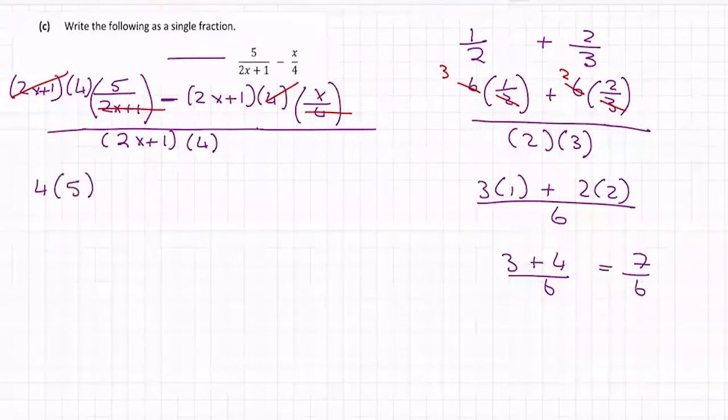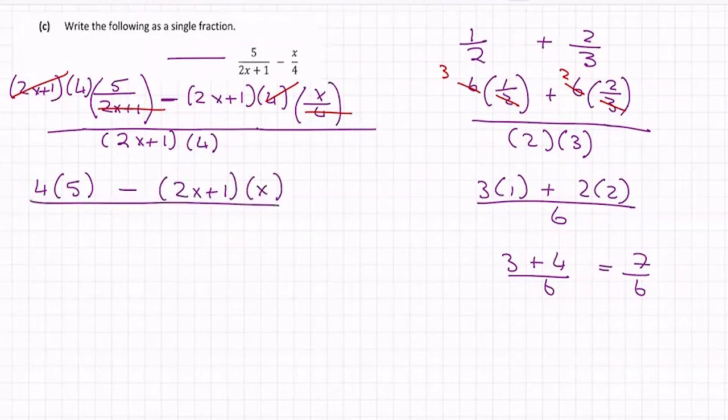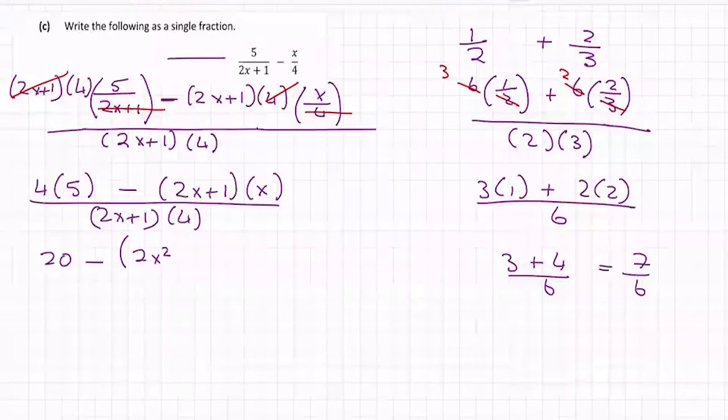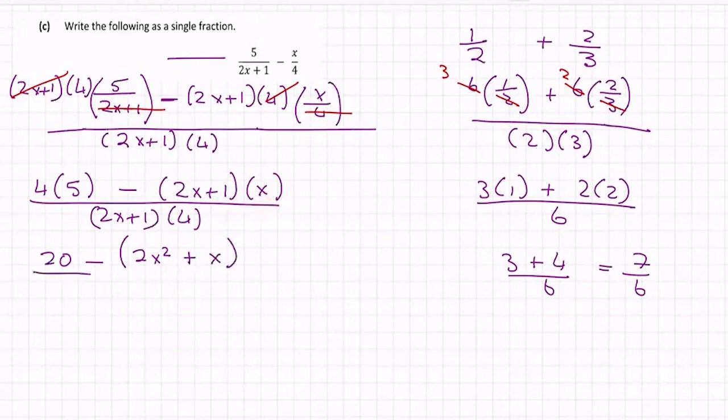So four times five minus two x plus one times x, all over two x plus one times four. And then let's multiply. So four fives are 20 minus two x by x, two x squared. Go back to that minus in a minute. Plus one by x plus x. Let's multiply the bottom. Four by two x is eight x. Four by one is four. Why did I put the brackets in here and pause in the video?